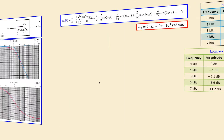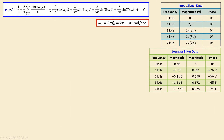Looking again at our input voltage, we see the DC and AC values. Working out the AC terms specifically using the summation, we have 2 over pi times sine of omega 0 t, plus 2 over 3 pi times sine of 3 omega 0 t, and so on. Omega 0 is the fundamental frequency, 2000 pi radians per second. Collecting these values in a table gives us a clear view at specific frequencies.